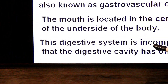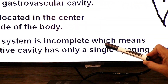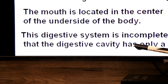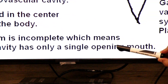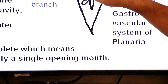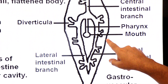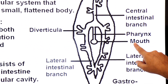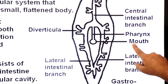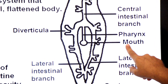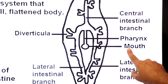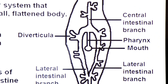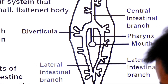This digestive system is incomplete, which means the digestive cavity has only a single opening known as the mouth. In this gastro-vascular system there is only one opening — the mouth — serving for both ingestion of food and egestion of undigested food. Such a digestive system is called an incomplete digestive system.